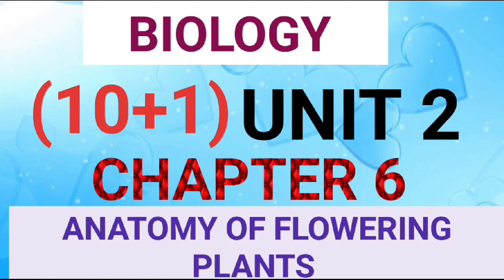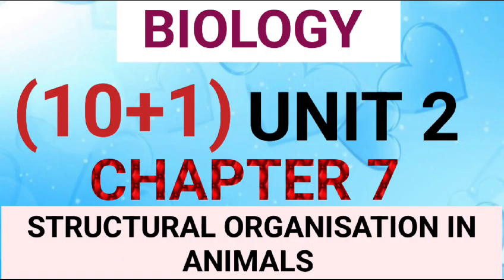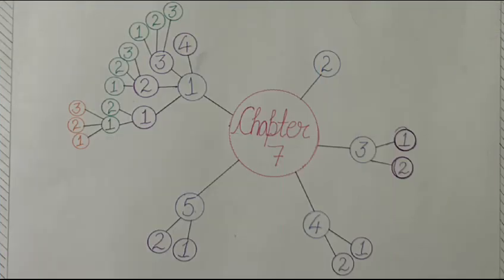So next chapter, the last Unit 2 chapter, is Structure Organization in Animals. In the previous video, we talked about the excretory and vascular system.